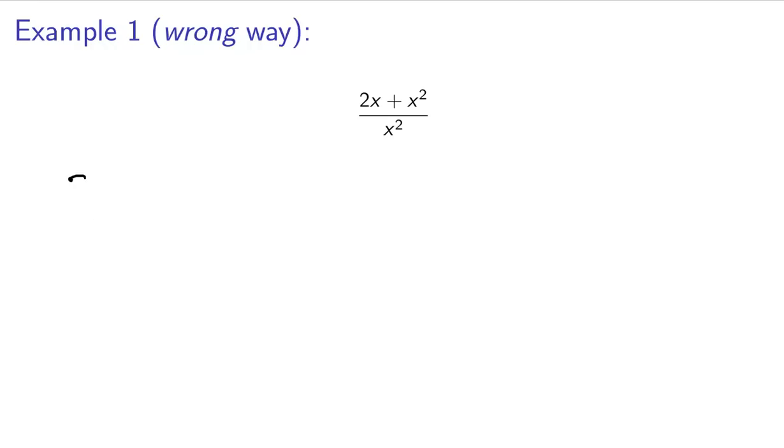So let's say I have 2x plus x squared over x squared. So the common mistake that I see is the way that you cancel. So the common mistake is, oh, here's an x squared and here's an x squared.